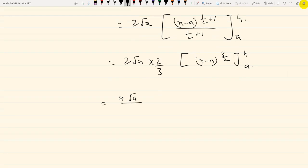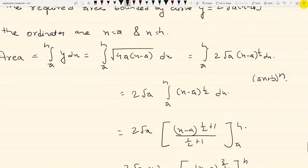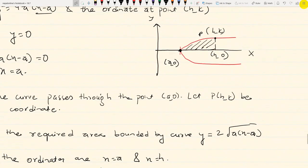This equals 2√a times (2/3)(x-a)^(3/2) evaluated from a to h, which gives (4√a/3)(h-a)^(3/2).